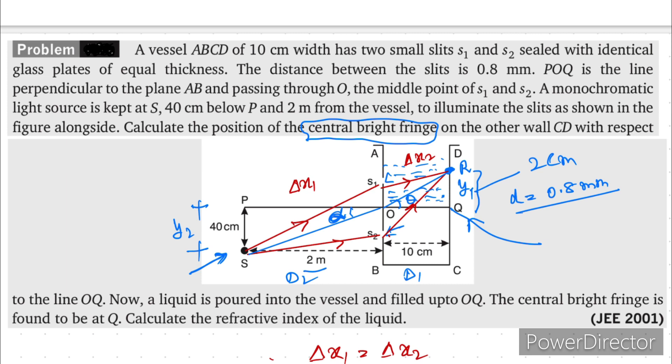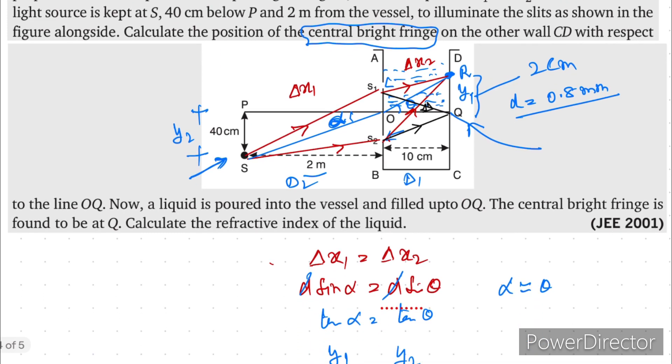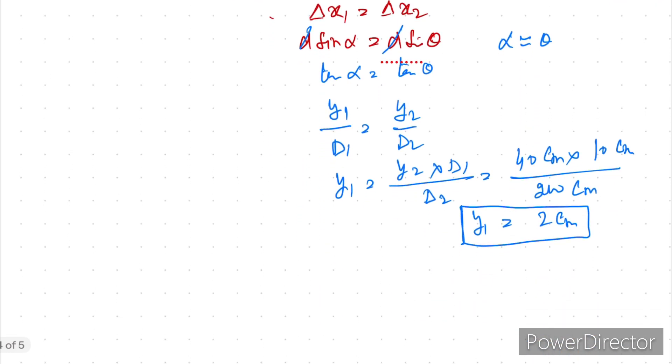The ray diagram for the part B will be like this. Since central bright fringe is now at Q, then that will be like this. Correct? So here the path difference is 0. The only path difference is delta x1 and that is adjusted by the whatever liquid we have poured. Then only we can have the bright fringe at Q. So part B means we have the bright fringe at Q.